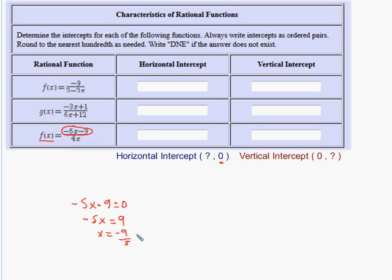Type that in your calculator or realize that negative nine fifths is the same thing as negative 18 tenths, if you let me double the top and bottom here. And then negative 18 tenths would be negative 1.8. So for that one, the x value that makes the output zero is negative 1.8. And in some textbooks, and some teachers, rather than calling this a horizontal intercept, they'll call that a zero of the function, because it's literally the x value that makes the function zero.